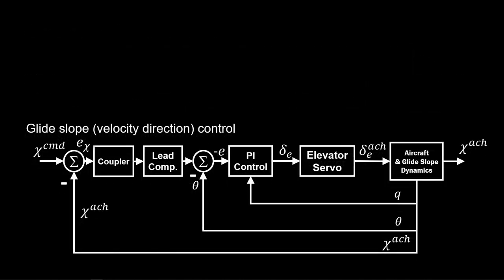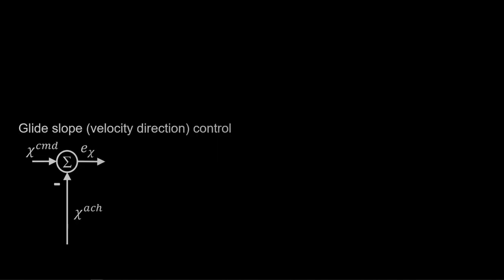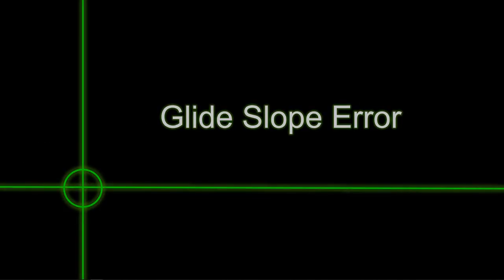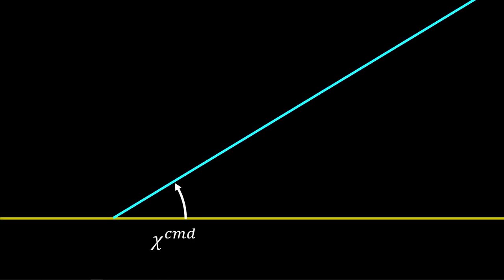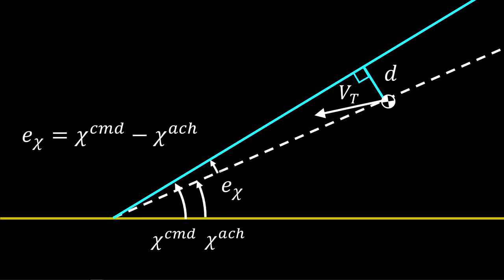Let's first focus on the glide slope loop, starting with the glide slope error definition. Starting with the ground and the commanded glide slope angle, here is the aircraft not on the glide slope, with some error d — a distance normal to the glide slope. Let the glide slope error be the commanded slope minus the glide slope.